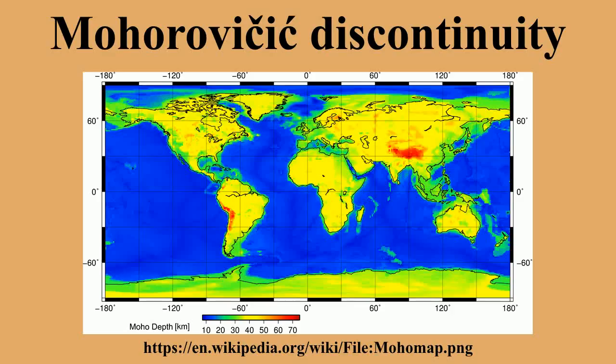The Japanese project Chikyu Hakken also aims to explore this general area with the drilling ship Chikyu, built for the Integrated Ocean Drilling Program. In late 2015, the drill ship JOIDES Resolution departed Colombo, Sri Lanka, and headed for the Atlantis Bank, a promising location in the southwestern Indian Ocean on the Southwest Indian Ridge, attempting to drill an initial borehole to approximately 1.5 km depth. If successful, researchers hope to return with the JOIDES Resolution to reach 3 km at a later date.